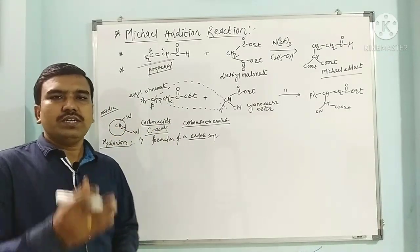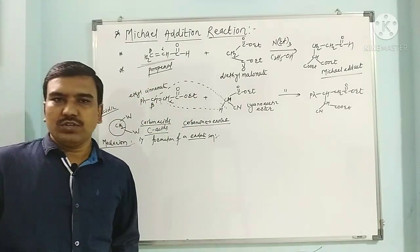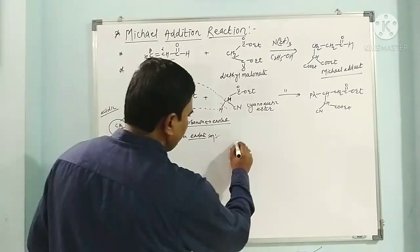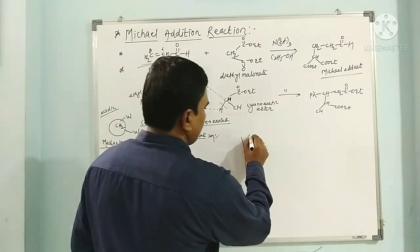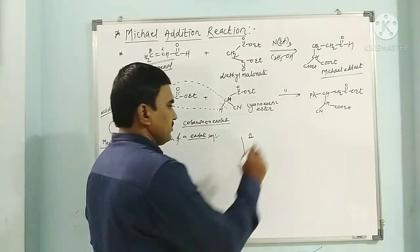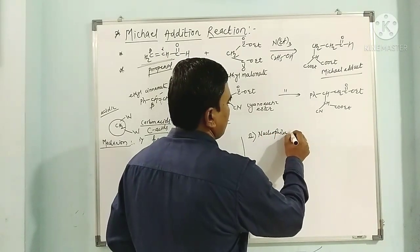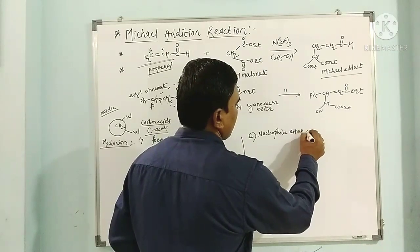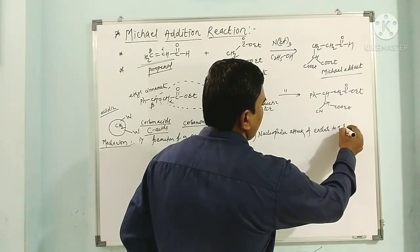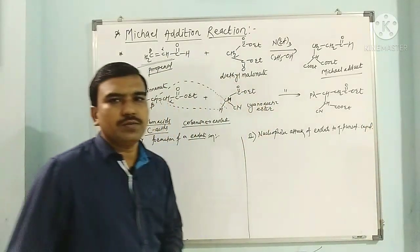Step 2 is the nucleophilic addition of the enolate to the alpha-beta unsaturated compound. The enolate acts as a nucleophile and the alpha-beta unsaturated compound acts as an electrophile. The alpha-beta unsaturated compound may be a carbonyl compound, an ester, or a nitrile.